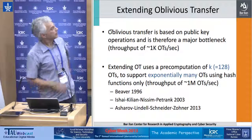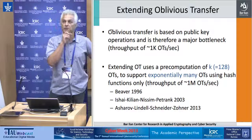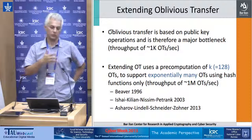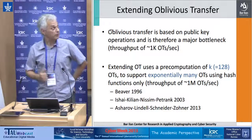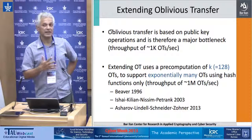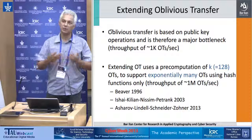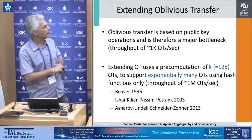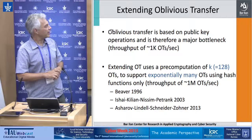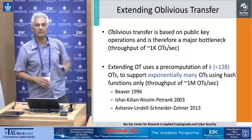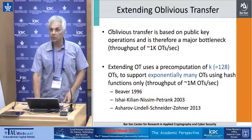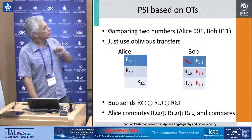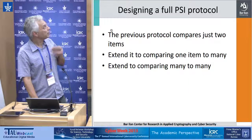Oblivious transfer requires public key operations, which are costly — around 1,000 to 10,000 per second. But using OT extension, we can do a small number of public key operations and then do the rest using symmetric key operations like AES, achieving throughput of around a million per second. Using oblivious transfer, we can do set intersection very efficiently.